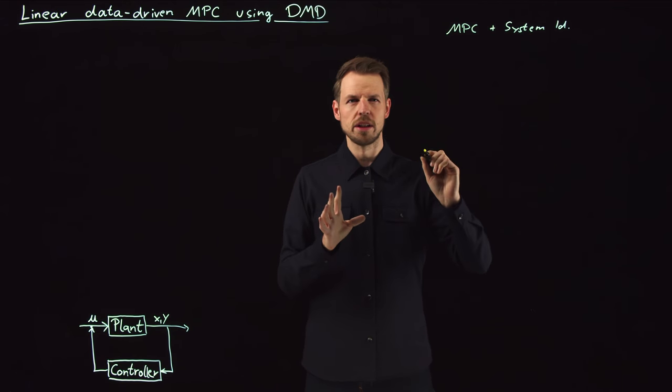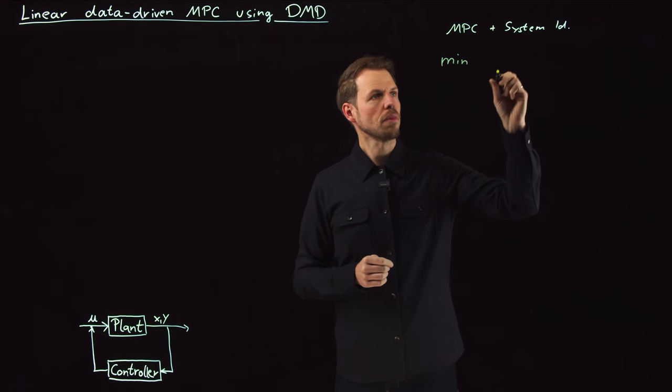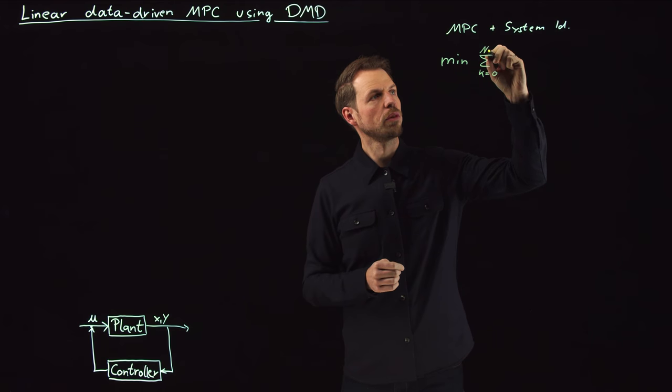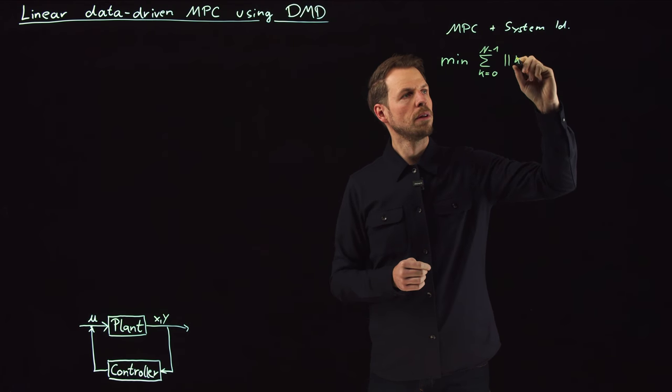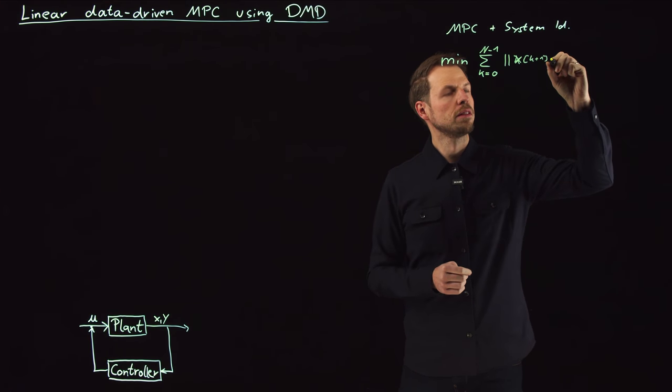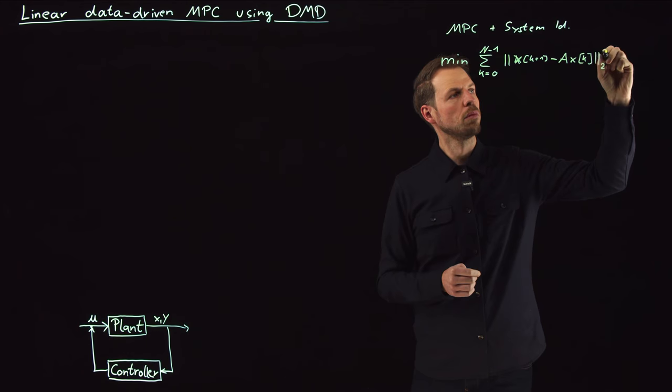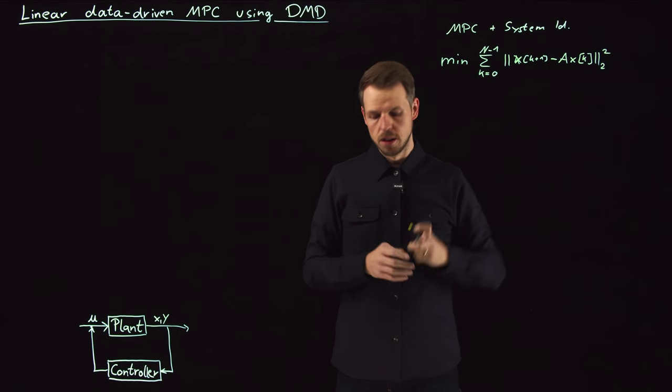So what we have seen already in dynamic mode decomposition, we had the following problem. We wanted to minimize a classical least squares function. So we consider trajectory data of n plus one samples. And what we want to minimize is the difference between the state at k plus one minus a linear map that maps for the state at time step k. And then we simply take the Frobenius norm or point-wise the two-norm.